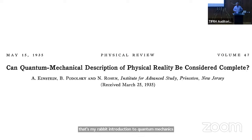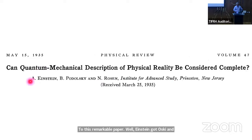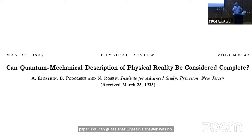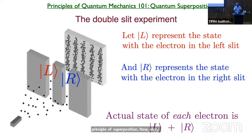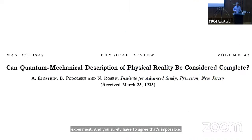Now I can talk about quantum entanglement. We can trace back the idea of quantum entanglement to a remarkable paper by Einstein, Podolsky, and Rosen in 1935, titled 'Can quantum mechanical description of physical reality be considered complete?' You can read the paper and guess that Einstein's answer was no — there is something unacceptable about this principle of superposition. Einstein proposed an even more complicated thought experiment.